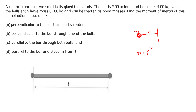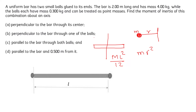For a rod having length l, the moment of inertia about an axis perpendicular to the length of the rod passing through the center is ml square divided by 12. And for a rod when we are calculating the moment of inertia about its one end but perpendicular to the length, that is ml square divided by 3.